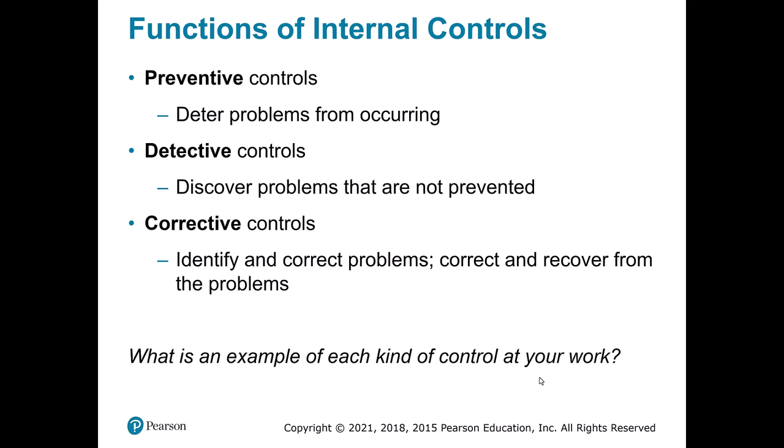We can split controls into three general categories: preventative, detective, and corrective. Preventative means stopping things from occurring. Examples include regular data backups, policies to replace aging hardware, or dual disks on servers. Things that keep data from being lost to begin with — like regularly replacing old hard drives — are preventative. We're trying to keep these problems from even happening.